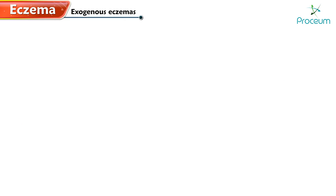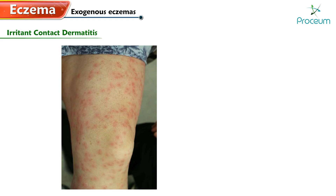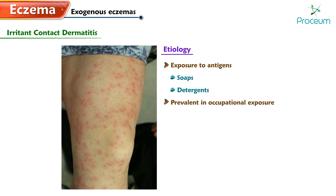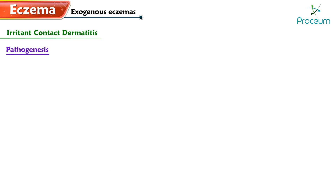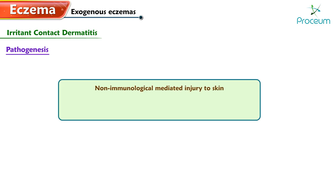Let's look at some exogenous eczemas, starting with irritant contact dermatitis. Its etiology involves exposure to antigens such as soaps and detergents. It's prevalent in occupational exposure, such as with hairdressers, cooks, the printing and painting industries, and construction workers. The pathogenesis is characterized by non-immunological mediated injury to the skin, so the patient can develop eczema on their first exposure to the irritating substance.